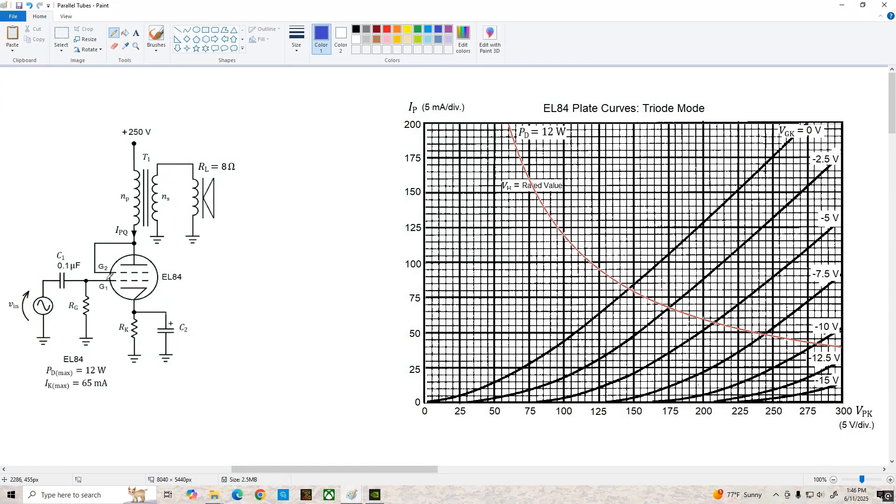We've got an EL84 configured as a triode, we're transformer coupling to an 8 ohm loudspeaker. We're using full cathode bypassing. The maximum power dissipation of the EL84 is 12 watts, its maximum cathode or plate current is 65 milliamps. Over here on the right we've got the plate curves and I've also superimposed the 12 watt maximum power hyperbola onto the curves. I plotted this using desmos and then just superimposed it over here for convenience.